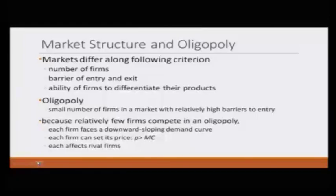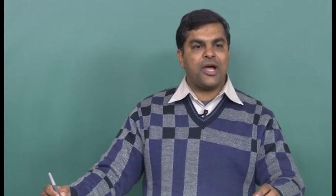Oligopoly is a special kind of market, which is characterized by the presence of a small number of firms in the market with relatively high barriers to entry. High barriers to entry ensure that the number of firms remains small. Because there are very few firms competing against each other, each firm faces a downward sloping demand curve — if the price of their product is higher, demand would go down, and it may become zero if someone offers the same product at a lower price.